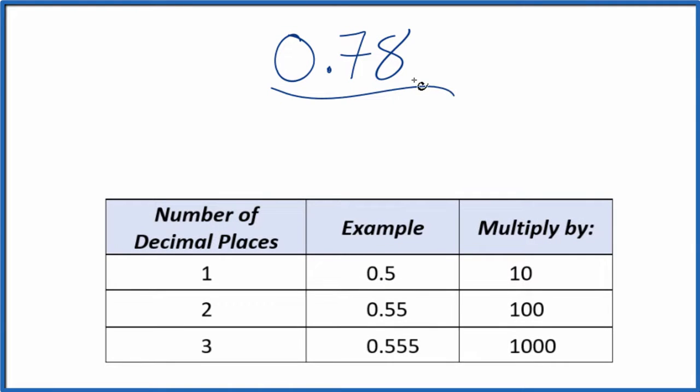Let's convert the decimal 0.78 to a fraction. Here's how we do it. We're going to call this 0.78 over 1. It's still 0.78, just dividing by 1, but now we have the start of a fraction.